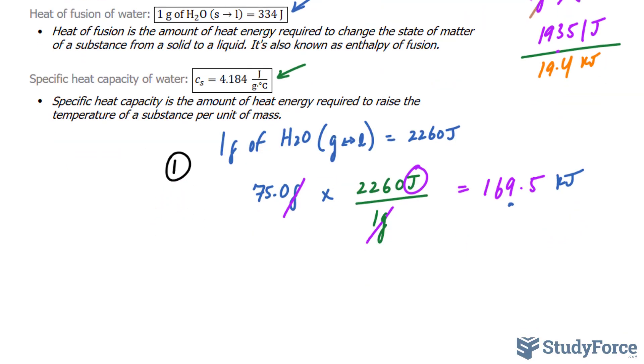The next calculation is to find out the amount of energy required to go from 100 degrees to zero. And for that we'll use the specific heat capacity of water. We have 75.0 grams, and if I multiply this to this number, 4.184 joules per gram times degrees Celsius, this unit and this unit will cancel out leaving us with joules over degrees Celsius.